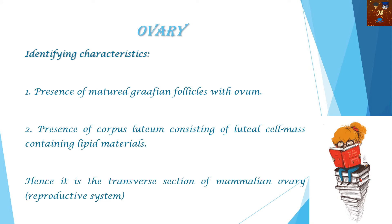The identifying characters are: presence of a matured Graafian follicle with ovum — I want to remind you to note the proper spelling: G-R-A-A-F-I-A-N, there is a double 'A' — and presence of corpus luteum consisting of a luteal cell mass containing lipid materials. These two are the identifying characters of the mammalian ovary, and this is its transverse section.